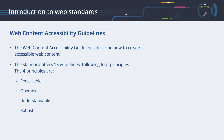In the following chapters, we will have a closer look at the Web Content Accessibility Guidelines, which describe how to create accessible web content. Before we go into the details of how to create accessible content, we should understand how it is structured and what problems are covered. The Web Content Accessibility Guidelines offer 13 guidelines following four principles. The four principles are Perceivable, Operable, Understandable, and Robust.